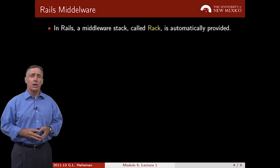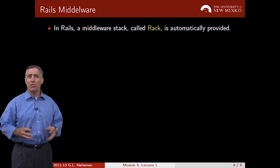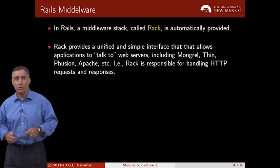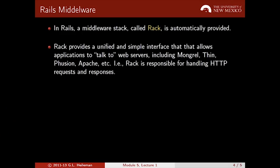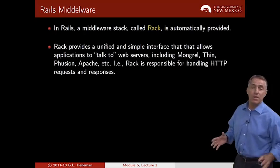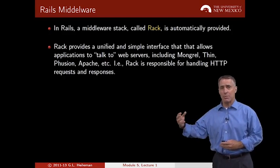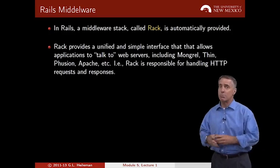When you built the blog application and ran the initial generator — Rails new — it provided a default middleware for you. What Rack does is it provides a very unified and simple interface that allows applications to talk to web servers, process those requests, and provide a response. It's ultimately responsible for handling the HTTP requests and responses. So everything that happens after your browser makes a request — what happens on the server side and the response — is all implemented over middleware.